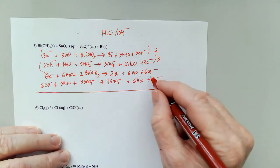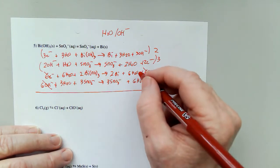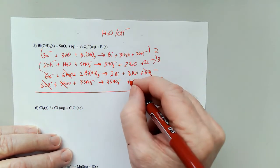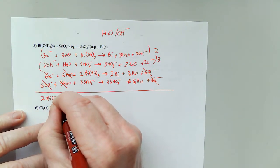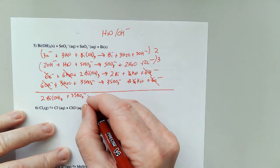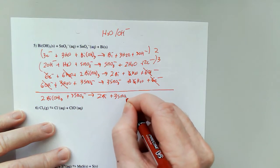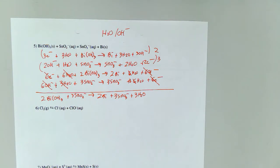Six electrons cancel six electrons. Six hydroxides cancel six hydroxides. Six and three is nine waters, six and six is twelve, so all nine of these will go and leave me with just three. So I have two Bi(OH)₃ plus three SnO₂²⁻ to give me two Bi plus three SnO₃²⁻ and three H₂O. That is number five.